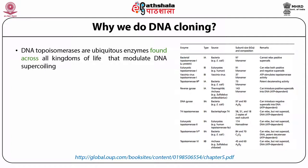Bacterial topoisomerase 1, belonging to type 1A category, is from E. coli. It is a 97 amino acid monomer which acts as a monomer. It cannot relax a positive supercoil but can introduce a negative supercoil. Eukaryotic topoisomerase 1 belongs to type 1B and is from humans. It is a monomer of 91 amino acids but can relax both positive and negative supercoils.